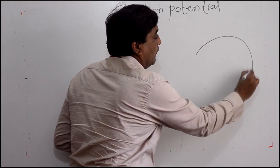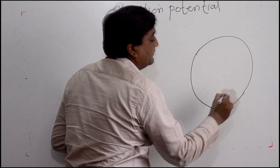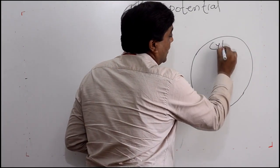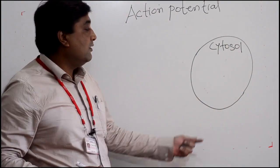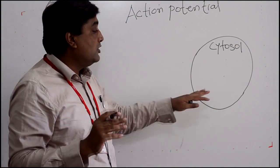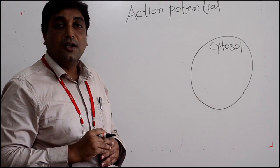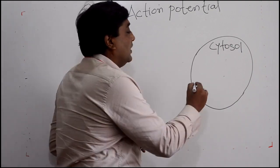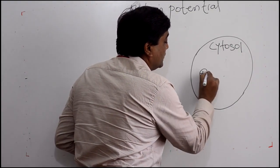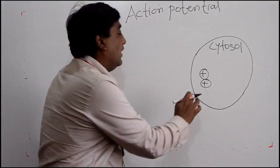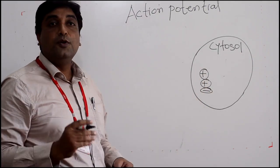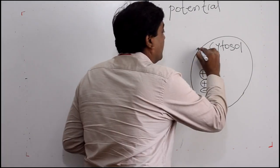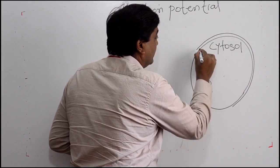A cell is made up of various organelles, and the cell membrane encloses all these organelles. Inside the cell, you will always have cytosol, which maintains the shape and distributes the various organelles like mitochondria, Golgi apparatus, and endoplasmic reticulum. The cytosol will always have fluid and charged particles — cations and anions — and these ions will be moving across the plasma membrane.